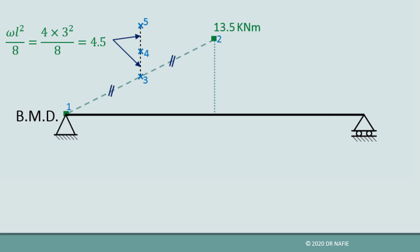Next, we draw three lines to act as tangents to the parabola. The first line connects points 1 and 5, the second line connects points 2 and 5, and the third line passes through point 4 and is parallel to the line connecting points 1 and 2. Finally, we draw the parabola as a curve tangent to the three lines and passing through points 1, 2, and 4 as shown.